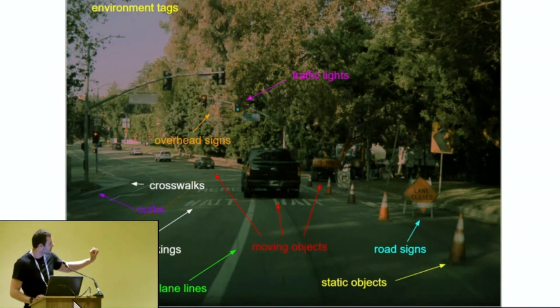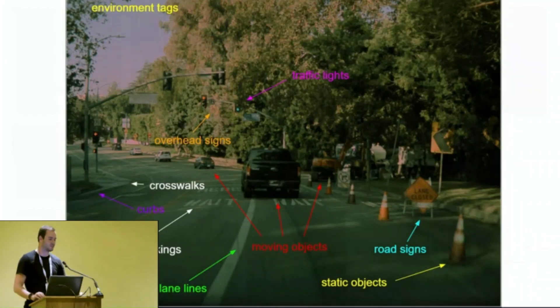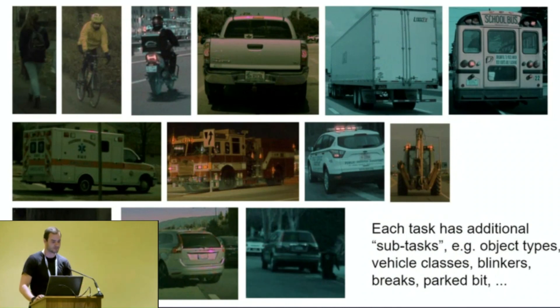And even though I've put only a single task here, moving objects, there's actually lots of subtasks for moving objects. Because I want to know a ton about all those objects. Is it a pedestrian or a bicyclist or a motorcyclist, a pickup truck? Is it a truck? Is it a bus? All those things have repercussions on your driving policy and your expectations about how these things might move.